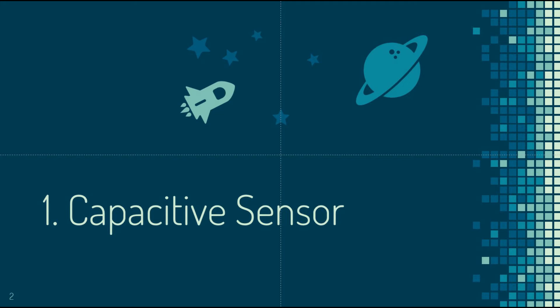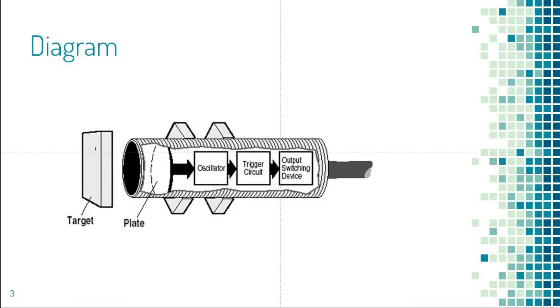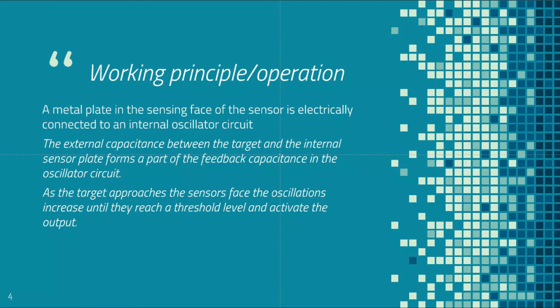This is a capacitive sensor — it is basically a sensing device. This is the diagram of how the capacitive sensor actually looks like in the real world. Let's take a look at the working principles or operation of the capacitive sensor and how it works.